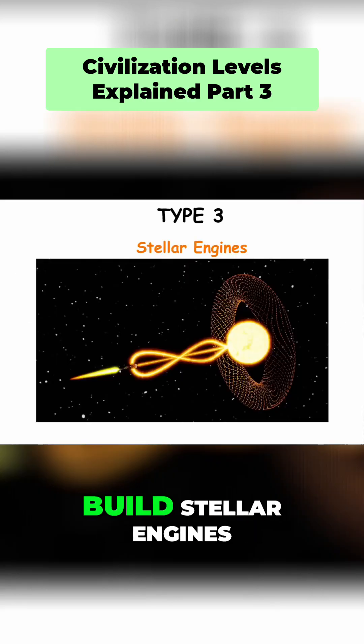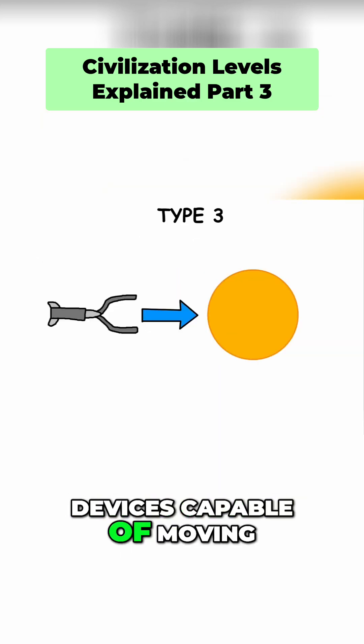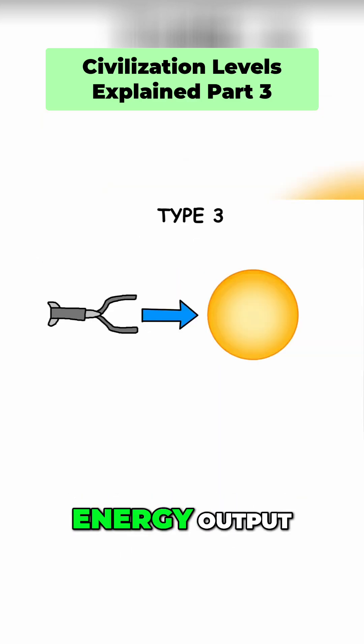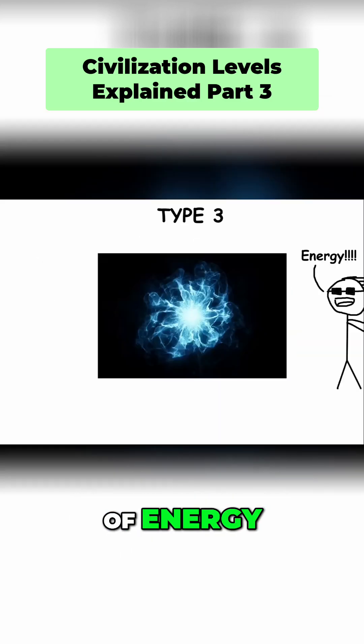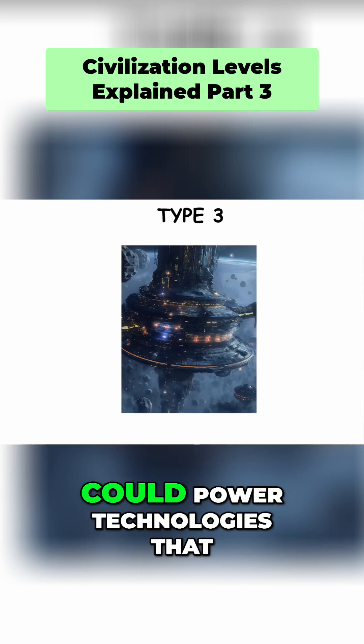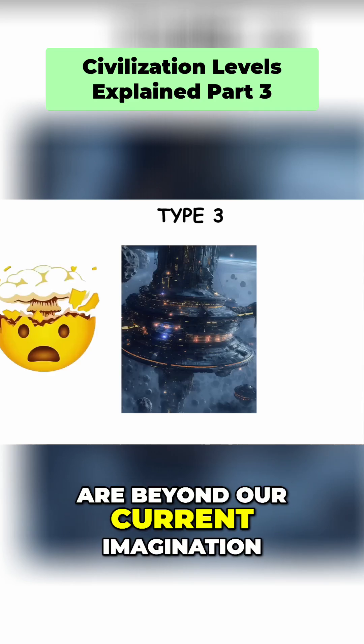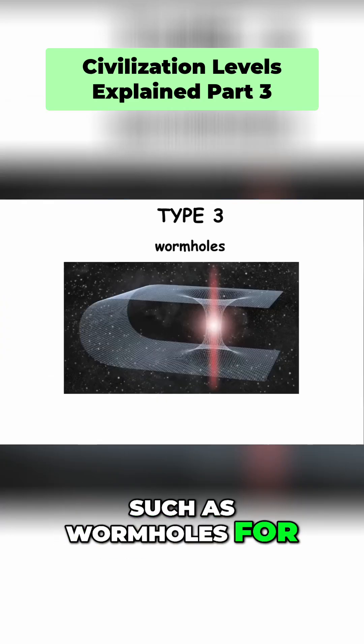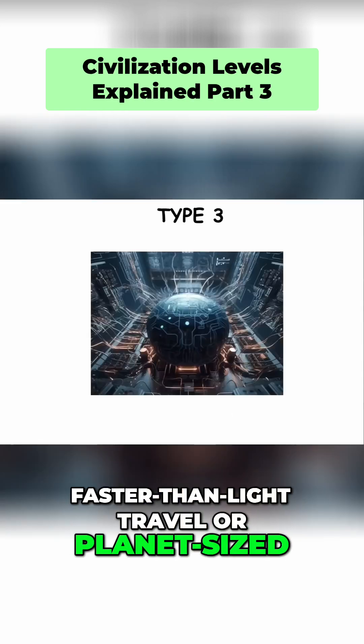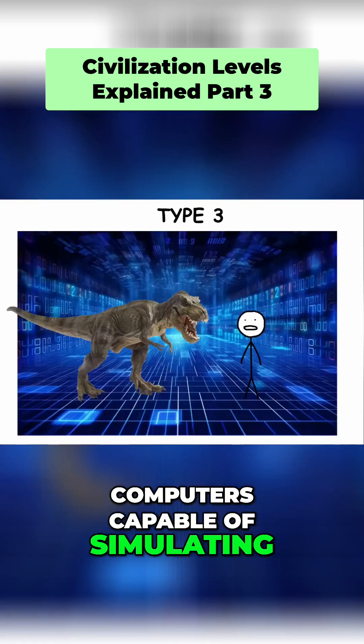The civilization might also build stellar engines, devices capable of moving stars or altering their energy output. With this vast amount of energy, a Type 3 civilization could power technologies that are beyond our current imagination, such as wormholes for faster-than-light travel or planet-sized computers capable of simulating entire universes.